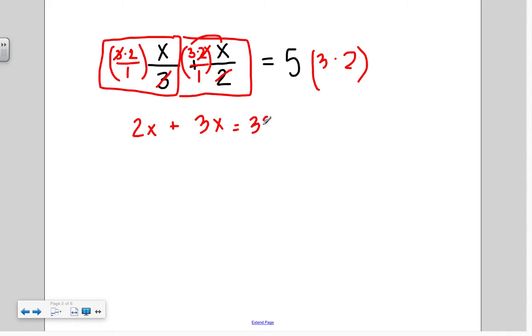So this new equation becomes 2x plus 3x equals 30. We can combine like terms here to get 5x equals 30. And to get rid of that 5, because we want x alone, we need to divide both sides by 5. x equals 6.